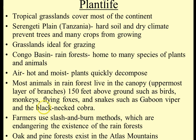Plant life: tropical grasslands are found all over most of the continent. One of the more famous plains is the Serengeti, located in Tanzania. Hard soil and dry climate prevent trees and many crops from growing there — you see it a lot on Discovery Channel and Animal Planet. Grasslands are ideal for grazing, with a lot of food to support many animals.